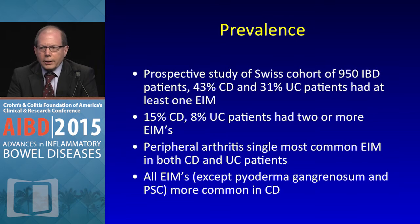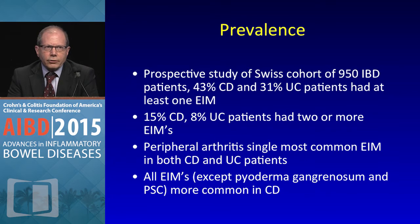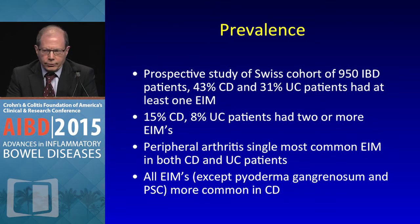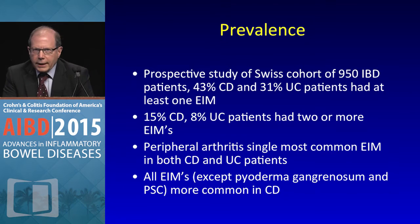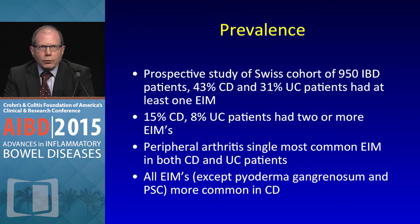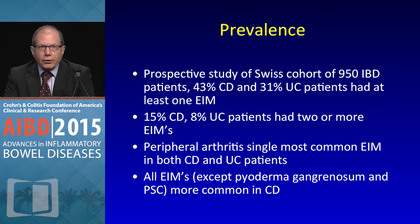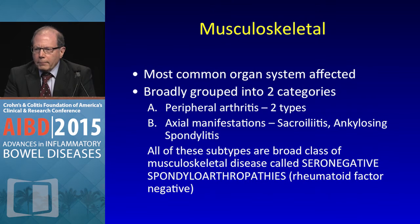A prospective study from Switzerland showed that 43 percent of patients with Crohn's and 31 percent with UC have at least one extra-intestinal manifestation. More common in Crohn's: 15 percent versus 8 percent of UC patients have two or more extra-intestinal manifestations. Peripheral arthritis is the most common EIM in both Crohn's disease and UC, and all of them are more common in Crohn's except pyoderma gangrenosum and PSC.